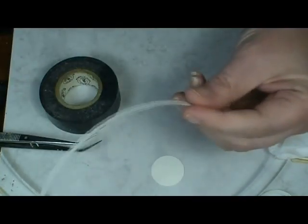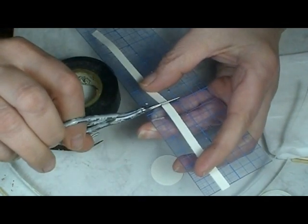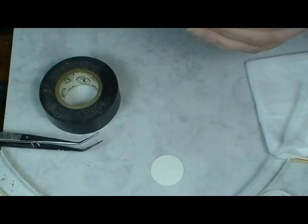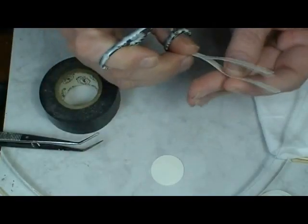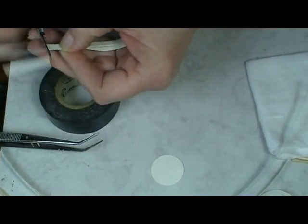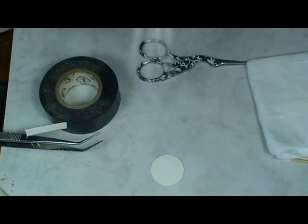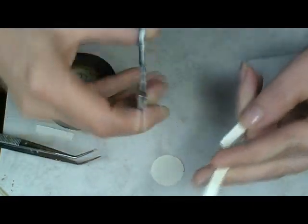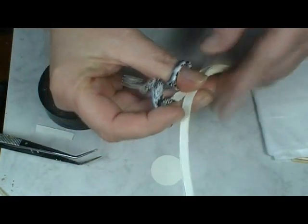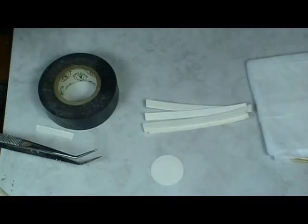Now we need to cut six strips that are three inches long each. The three inch measurement is for this size basket. If you're making them bigger, obviously you'll need longer strips.